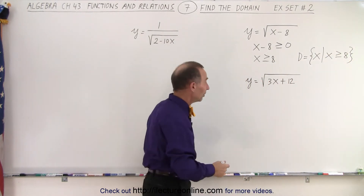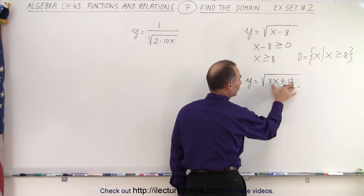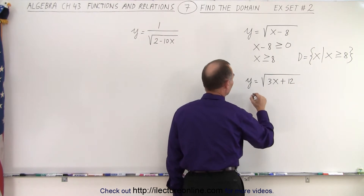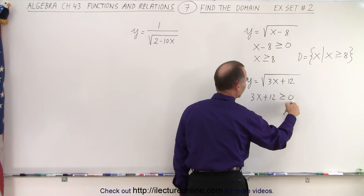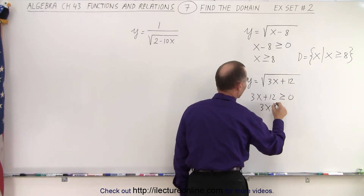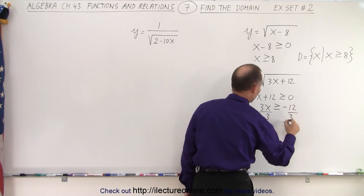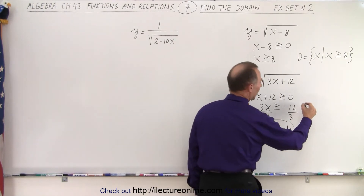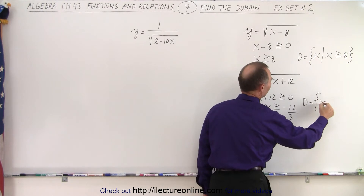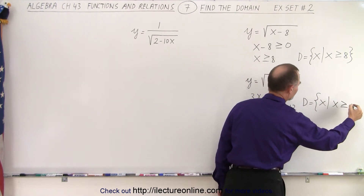On our next example, we attack it the same way. We look at what's inside the radical and recognize it must be greater than or equal to zero. So 3x plus 12 is greater than or equal to zero. Moving the 12 across, 3x is greater than or equal to negative 12. Dividing both sides by 3, we get x is greater than or equal to negative 4. So the domain is the set of all x's such that x is greater than or equal to negative 4.